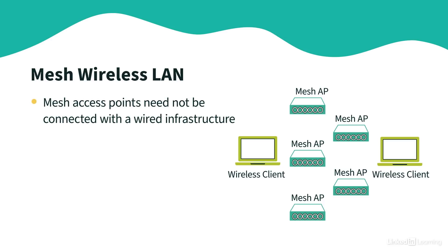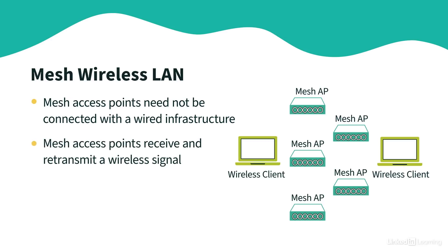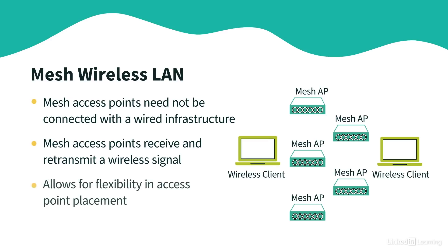Fortunately, we have the option of using mesh access points. These types of access points don't need to be connected to our wired infrastructure. In fact, as long as the mesh access point has power, it can receive a signal from one access point and then retransmit that wireless signal, giving us a lot of flexibility when it comes to access point placement.